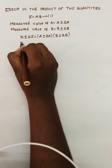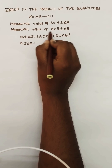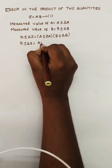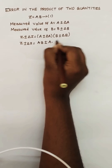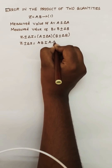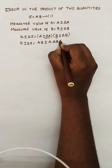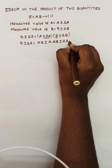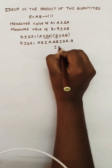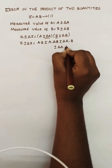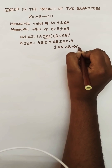So the next step is to remove this bracket. Multiply out: z plus or minus delta z equals a·b, plus or minus a·delta b, plus or minus delta a·b, plus or minus delta a·delta b. Take this as equation number 2.